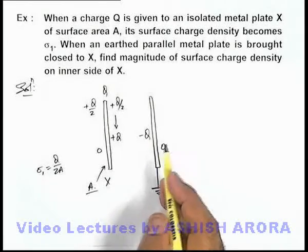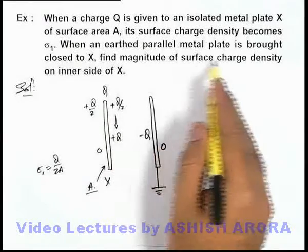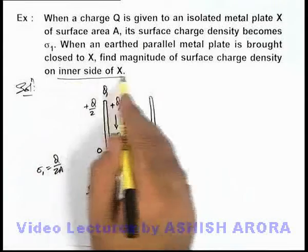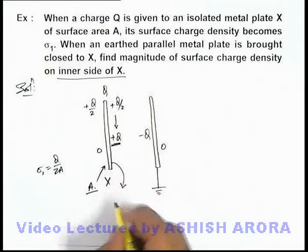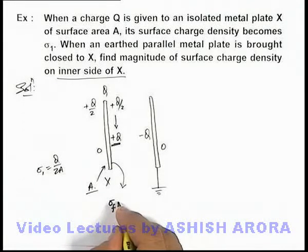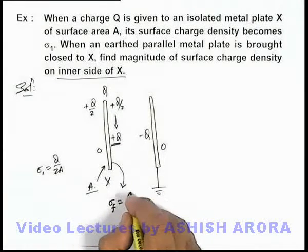We are required to find in the final situation the magnitude of surface charge density on the inner side of X, which is carrying a charge Q. So we can say the final surface charge density will be σ_final = Q/A.